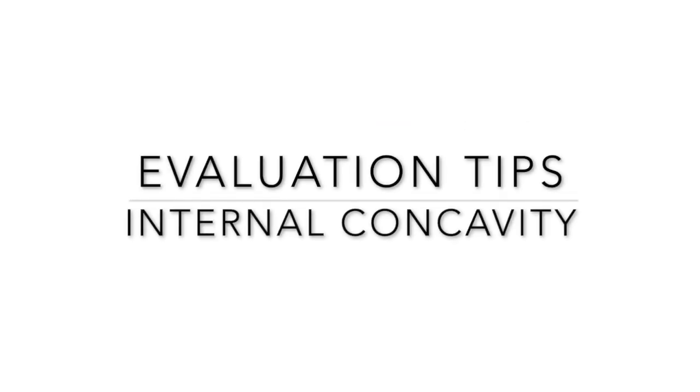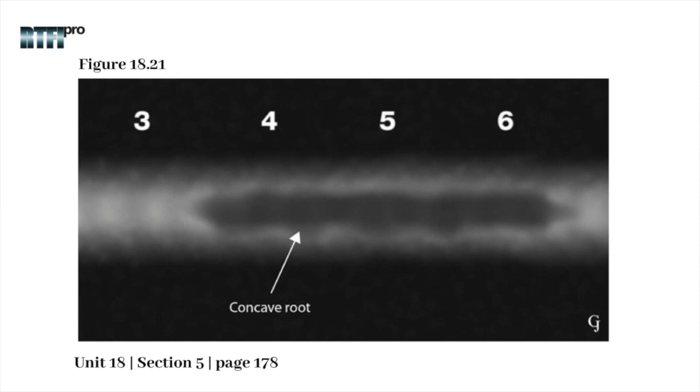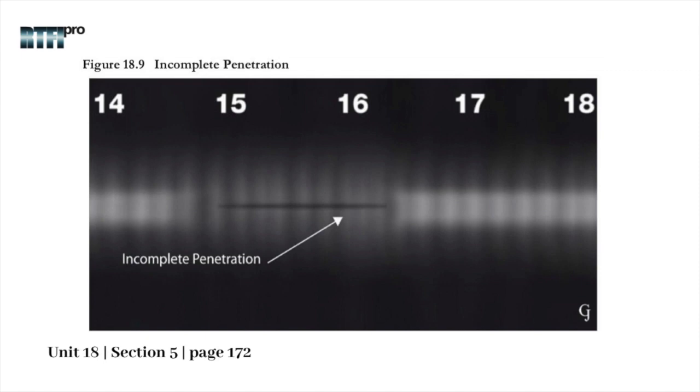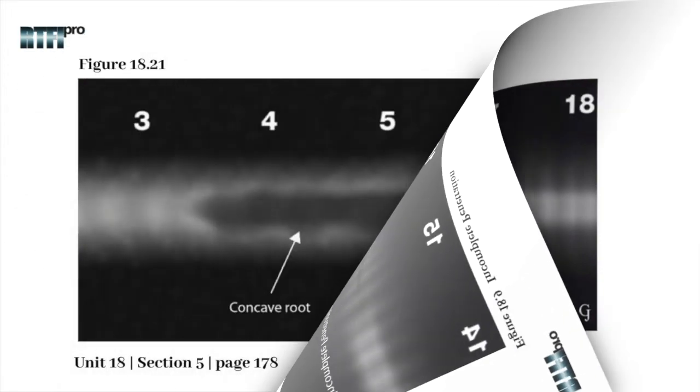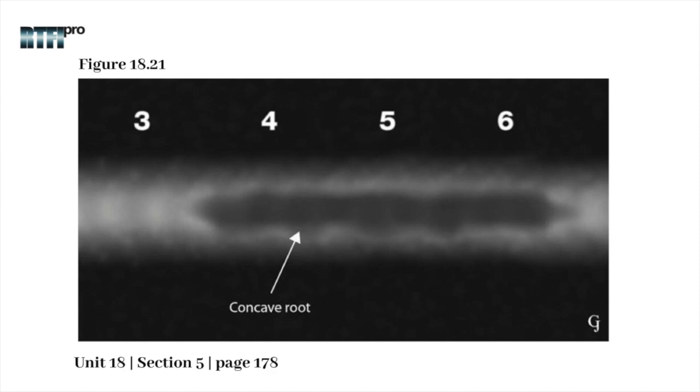Evaluation Tip: Concavity can appear as a small localized area or an area having length. This indication will be found in the root area having a density variation as a result of insufficient filling of the root. With incomplete penetration, the indication will appear as a solid straight line or lines, but the straight lines will be absent when there is concavity.